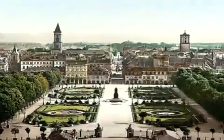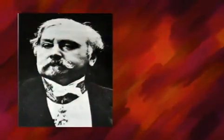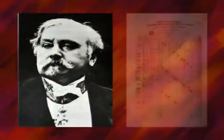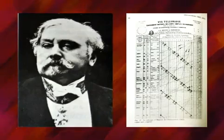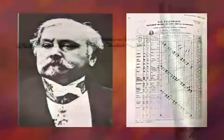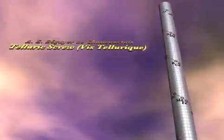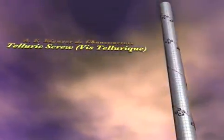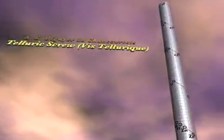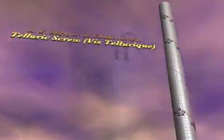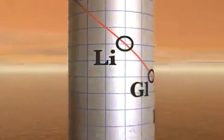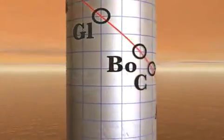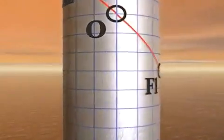Alexandre Emile de Chancatois, in 1862, was the first to recognize the periodicity of the elements — that as one goes from element to element in order of increasing atomic weight, the properties of the elements seemed to repeat periodically. He created a three-dimensional helical system to show this pattern.